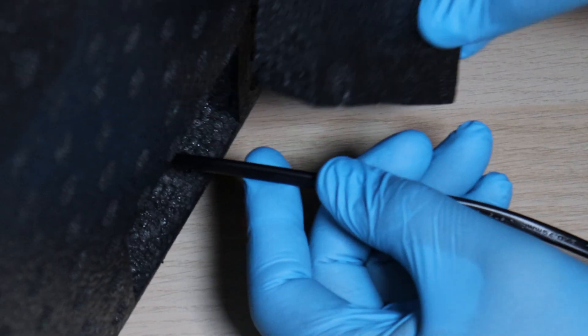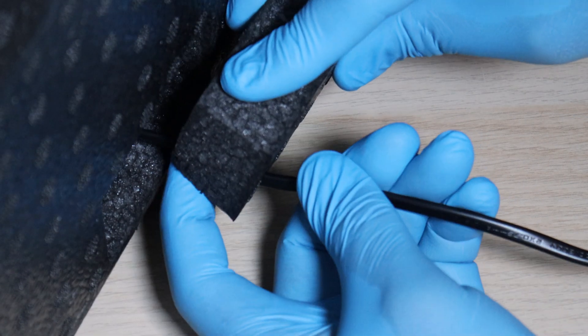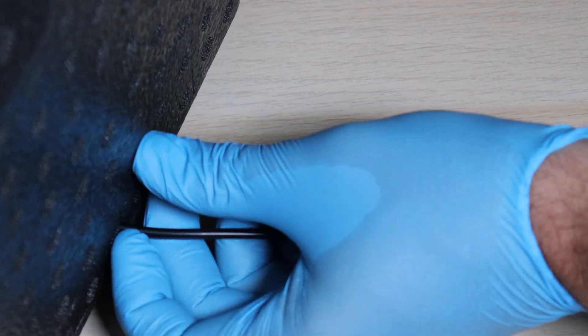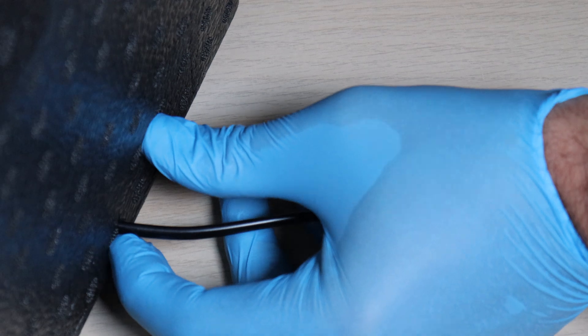And we place the foam block on the power cable and put it back in place, and that creates a really nice seal.